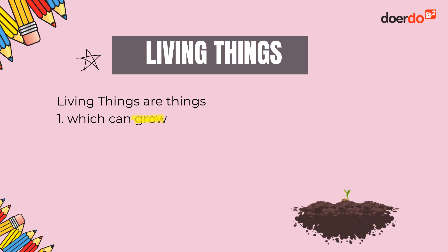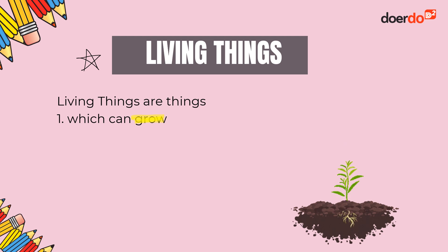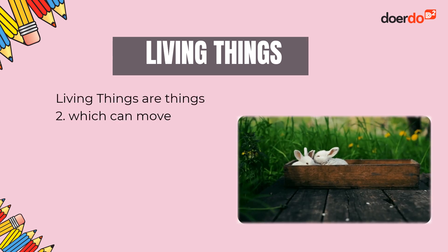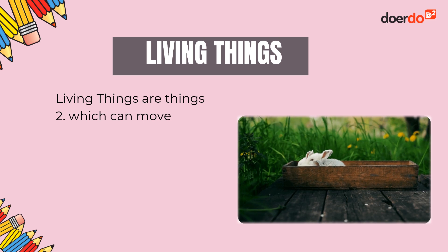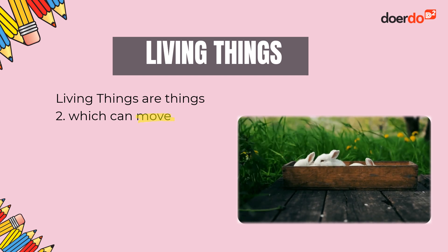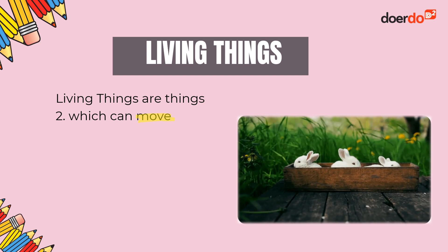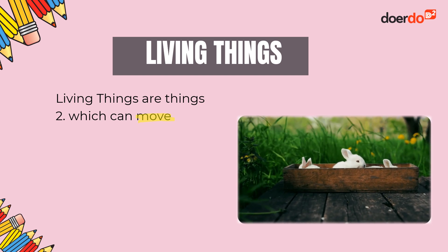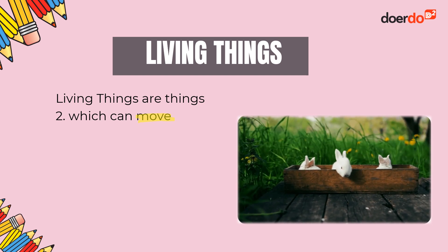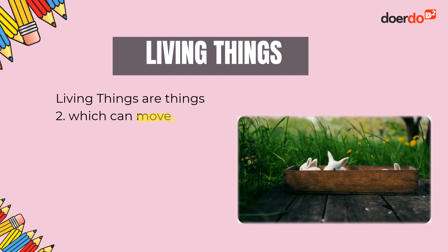Plants, animals, and humans are all living things because we can grow. Moving on to the next property: living things can move. If you look at the rabbits over here, they can move around. We human beings are living things too because we can move around as well.